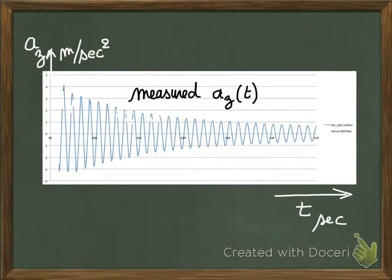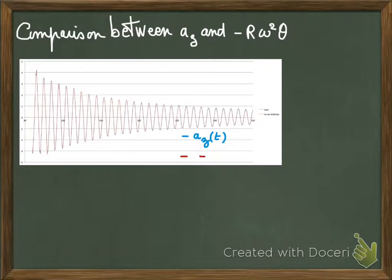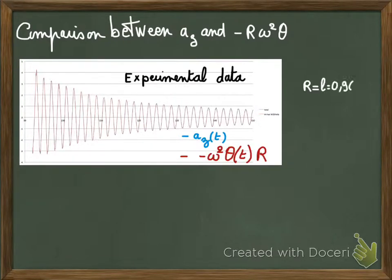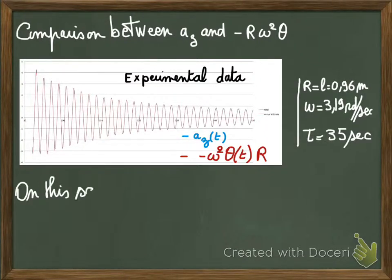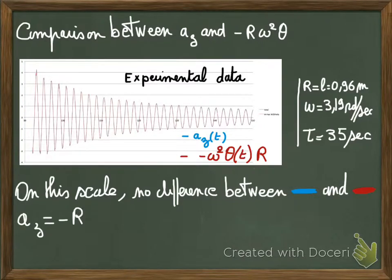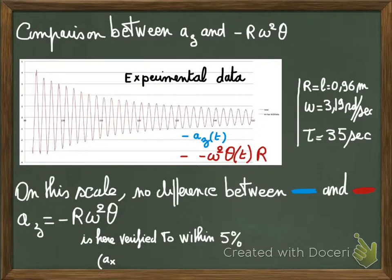Now the point is, can we directly calculate this curve using the theta analysis we've done before? The comparison of AZ and minus R omega squared theta is here, and it's rather amazing to see that at this scale we cannot easily distinguish by eye the difference between AZ and minus R omega squared theta.